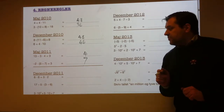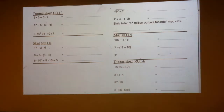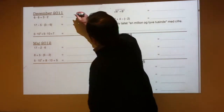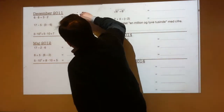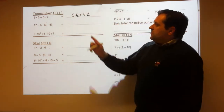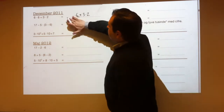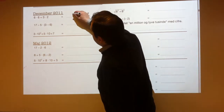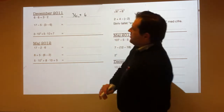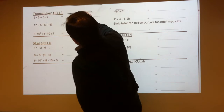Moving on to December 2011. 6 times 6 plus 3 times 2. You've got to do the multiplications before you do the plus. So 6 times 6 is 36, and 3 times 2 is 6. So it's the same as 36 plus 6, which is 42.